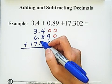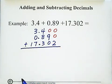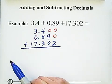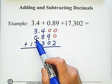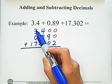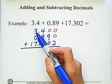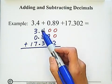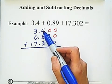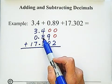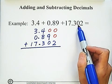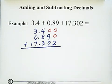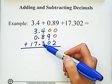The reason we need to line up the decimal numbers is that we should add digits with the same place value. For example, in 3.4, the 3 is the ones digit, and in the second number, the ones digit is 0. For the third number, 17, the 7 is the ones digit. After the decimal point, 4 is the tenths digit. In 0.89, 8 is also the tenths digit. In 17.302, 3 is the tenths digit. That's why we need to line up the decimal point, so that digits with the same place value are added together.